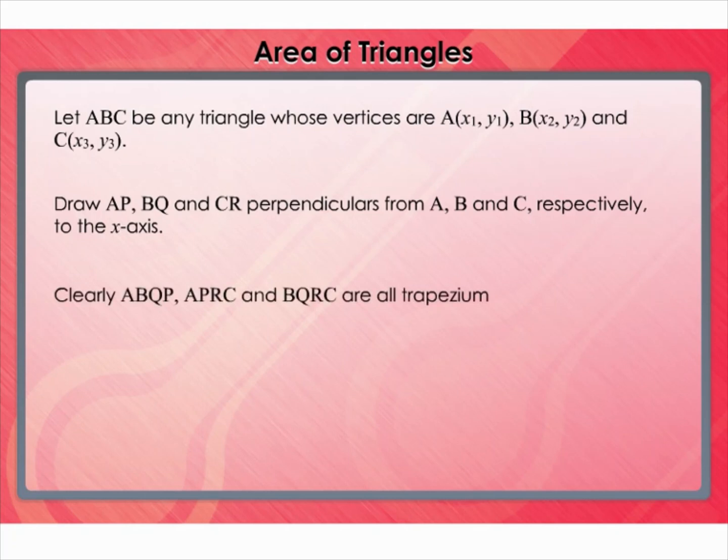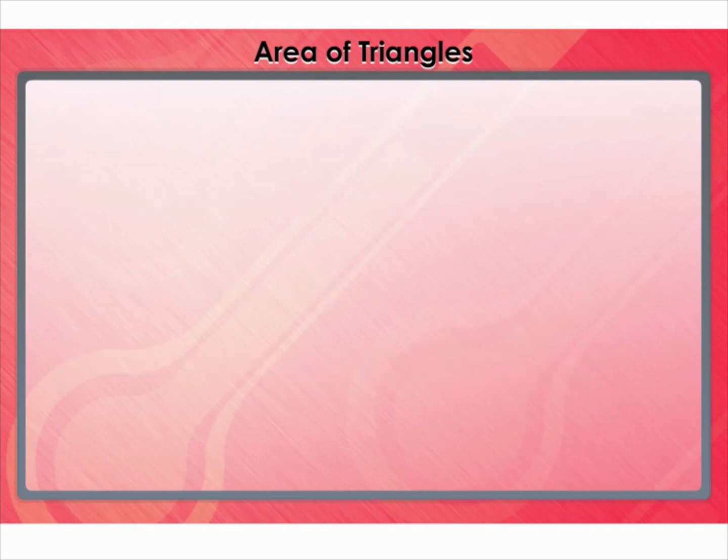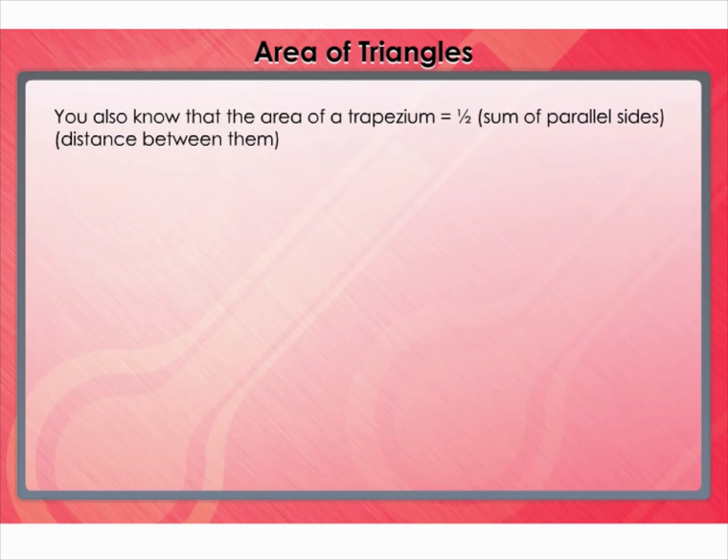Clearly, ABQP, APRC, and BQRC are all trapeziums. Now, from the figure, it is clear that the area of triangle ABC is equal to area of trapezium ABQP plus area of trapezium APRC minus area of trapezium BQRC. You also know that the area of trapezium is equal to 1/2 of sum of parallel sides into distance between them.